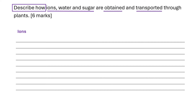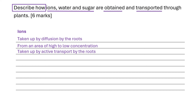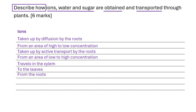First of all, talking about ions. They're taken up by diffusion by the roots — that is from an area of high concentration to an area of low concentration. They're also taken up by active transport, again by the roots. Active transport is from an area of low concentration to an area of high concentration using energy. The ions then travel in the xylem up the plant to the leaves from the roots.